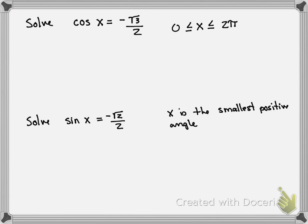So we've got two trig equations we're going to solve. We're looking for cosine of some angle equals negative square root of 3 over 2.